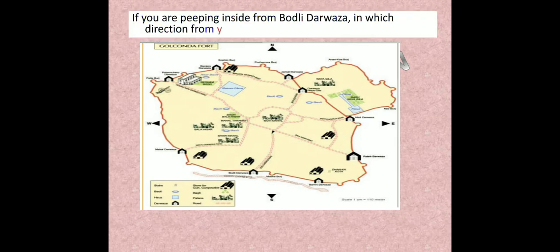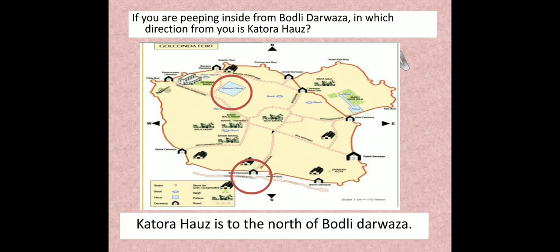First question: if you are peeping inside from Bodhli Darwaza, in which direction from you is Katora Haas? Let us first see where Bodhli Darwaza is and where Katora Haas is. If one wants to walk from Bodhli Darwaza to Katora Haas, the person will have to go from south to north. So Katora Haas is to the north of Bodhli Darwaza.